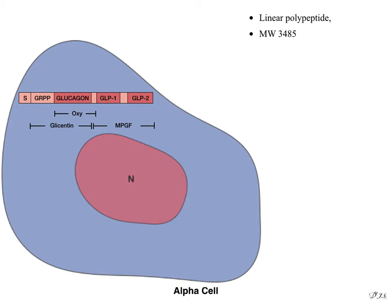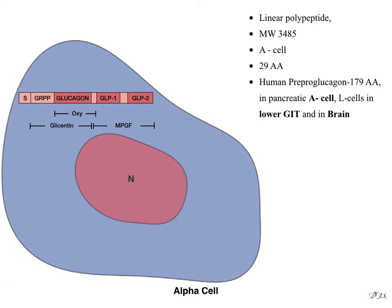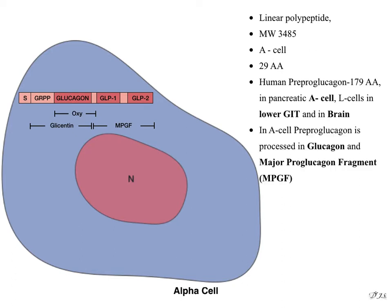Human pre-pro-glucagon is a 179 amino acid protein found in A cells, L cells in the lower gastrointestinal tract, and in the brain. In alpha cells, pre-glucagon is processed into glucagon and a major pro-glucagon fragment.